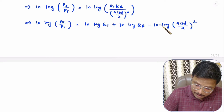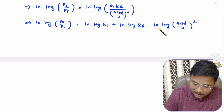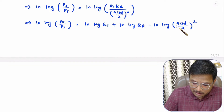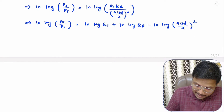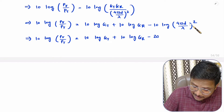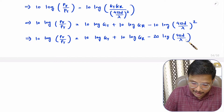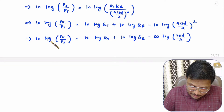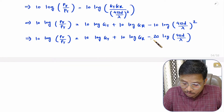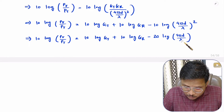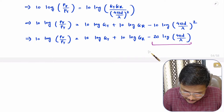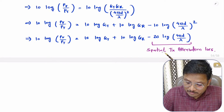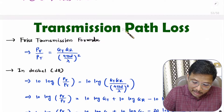We can further simplify this equation by bringing the exponent two in front, so the term becomes minus 20 log of (4πD/λ). This negative term belongs to spatial transmission loss. Based on this transmission attenuation loss, we can derive the transmission path loss equation.